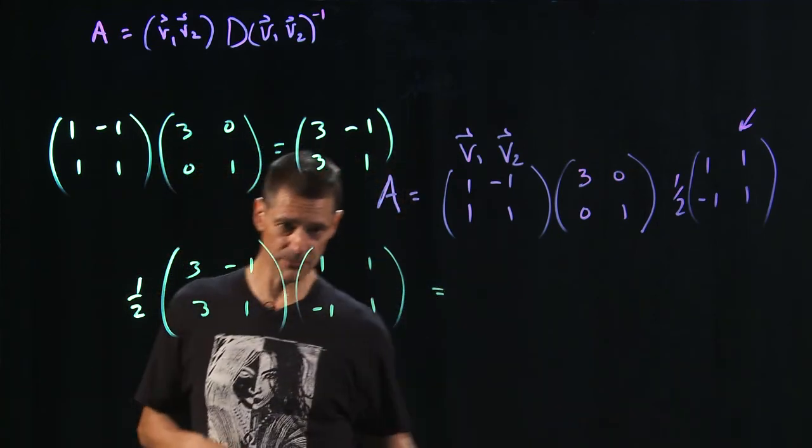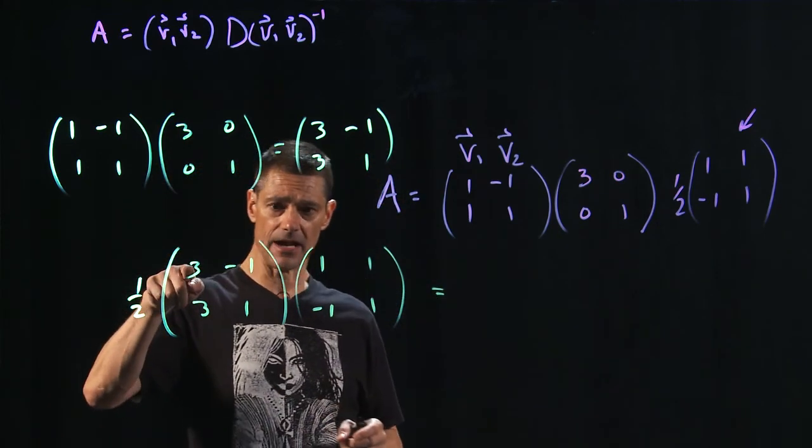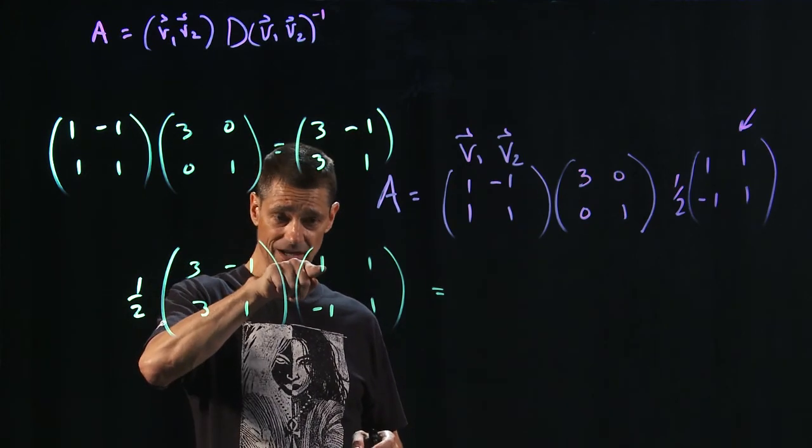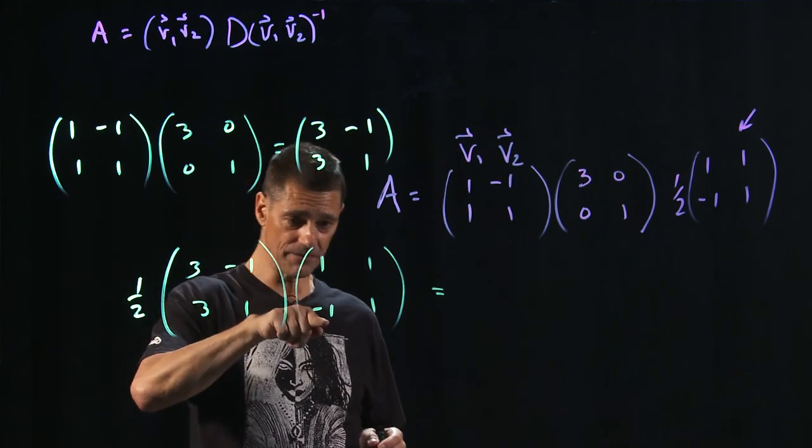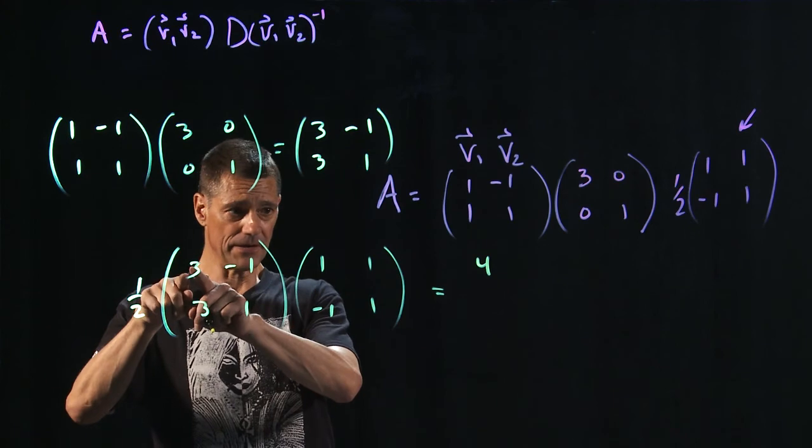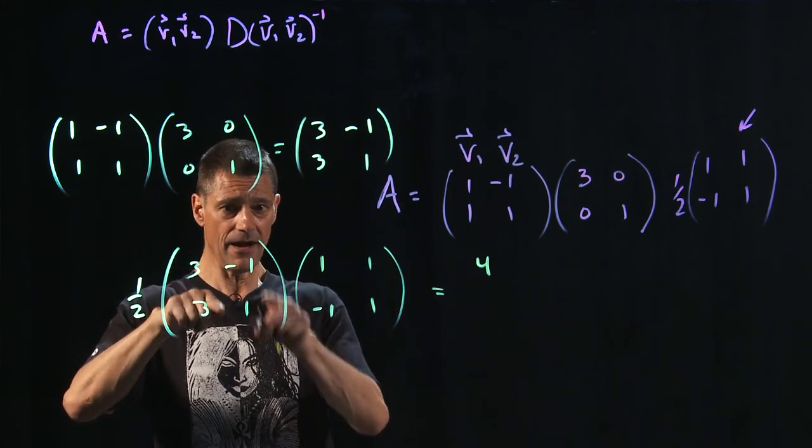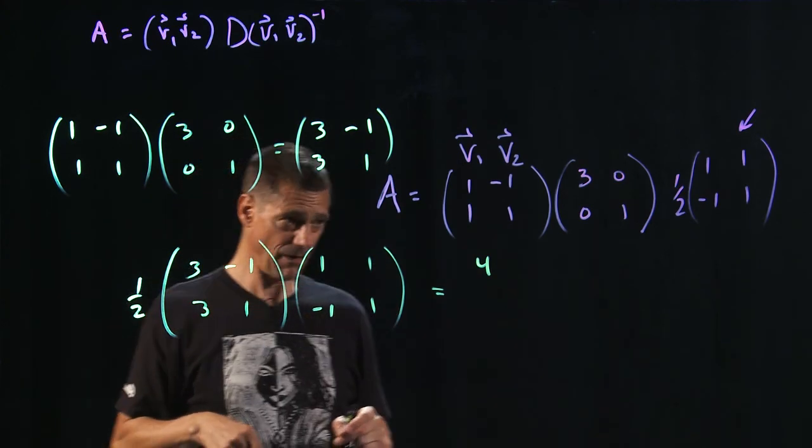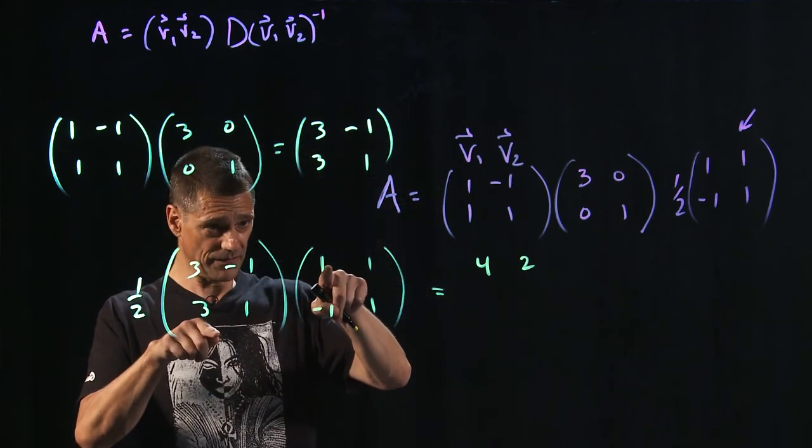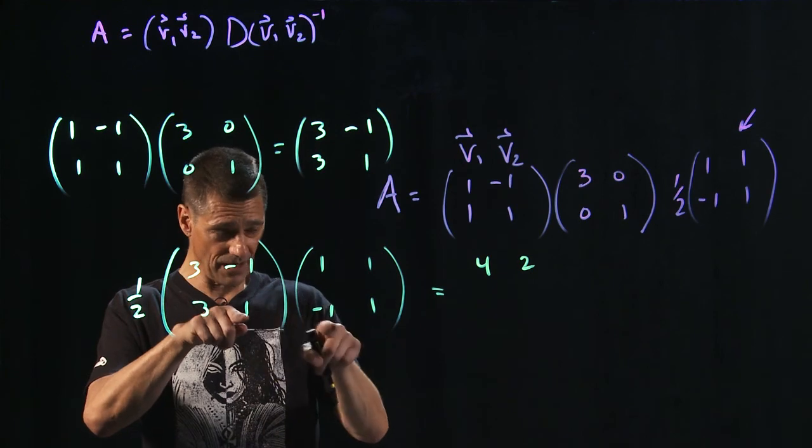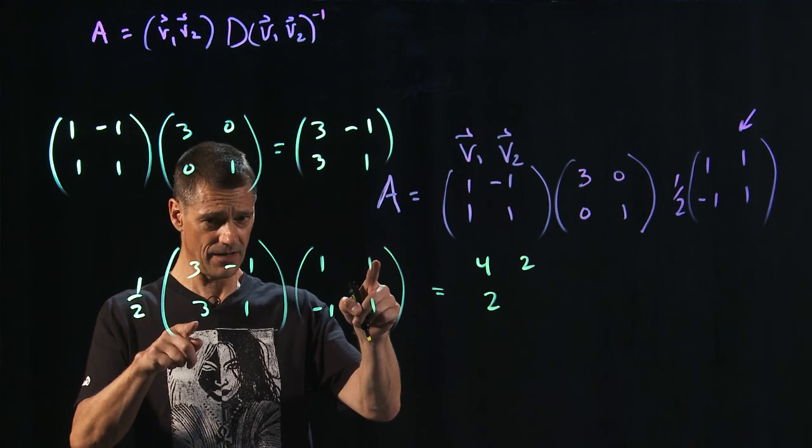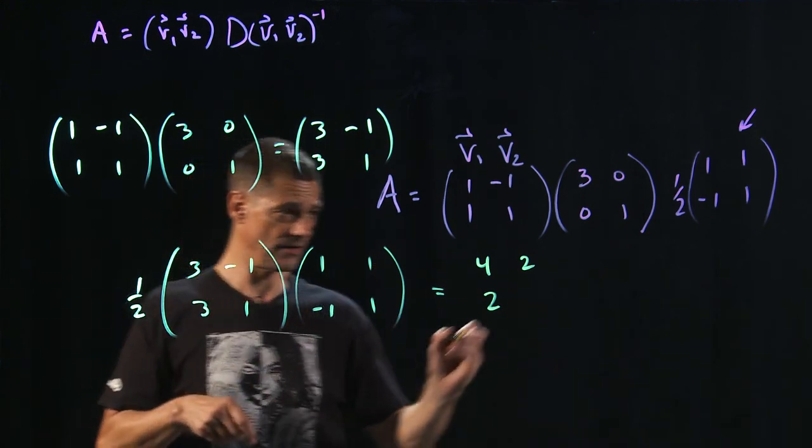2 by 2 by a 2 by 2, it will spit out a 2 by 2. 3 times 1 is 3, plus negative 1 times negative 1 is positive 1. So this is 4. 3 times 1 is 3, plus negative 1 times 1 is minus 1. So this becomes 2. 3 times 1 is 3, plus 1 times negative 1 is negative 1. This is 2, and 3 times 1, plus 1 times 1 is 4.